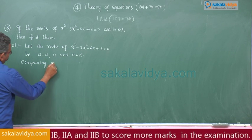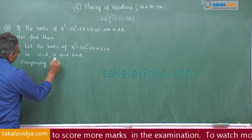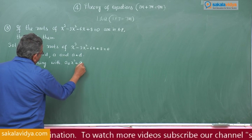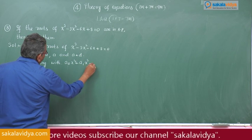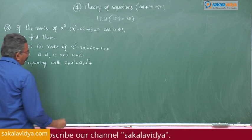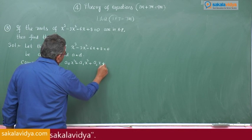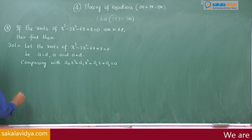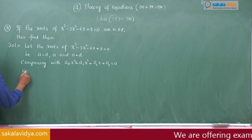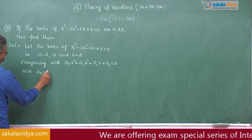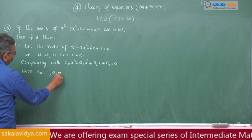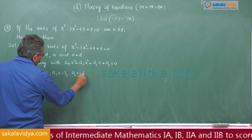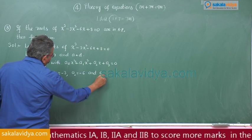Comparing with a₀x³ + a₁x² + a₂x + a₃ = 0, here a₀ = 1, a₁ = -3, a₂ = -6, and a₃ = 8.